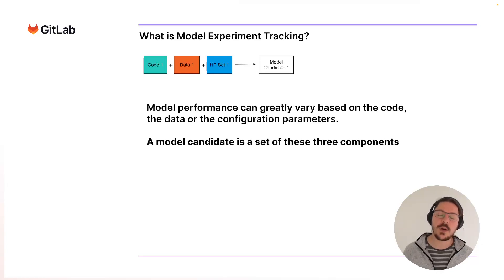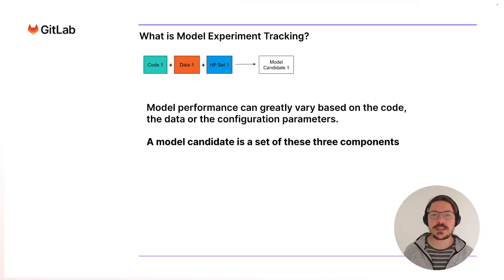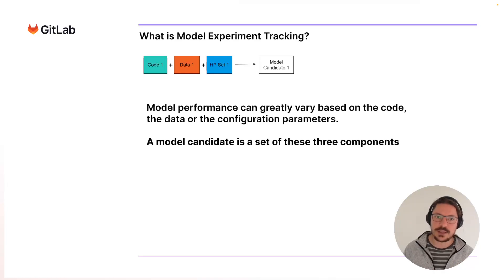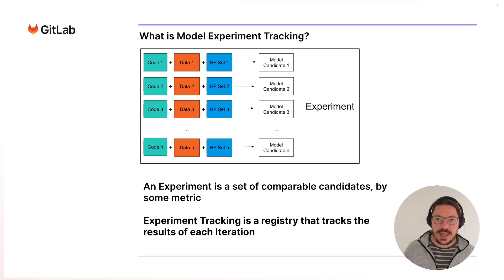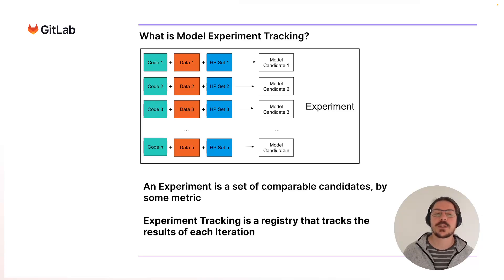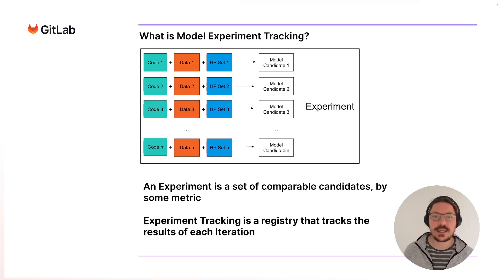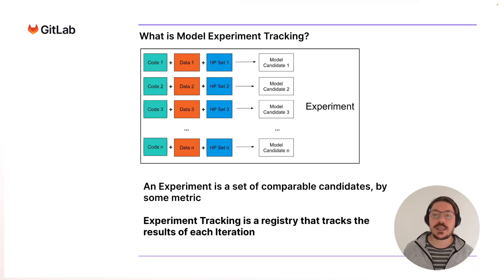For example, a common practice is hyperparameter tuning — we will try a whole set of hyperparameters and see what is the best performance. A candidate is a set of these three components: code, data, and hyperparameters. An experiment is a set of candidates that are comparable to each other. Once we have many variations of these candidates, we group them into an experiment to see what is the best candidate over time. And that is called an experiment.